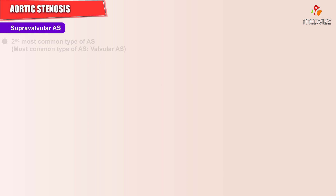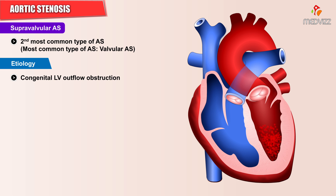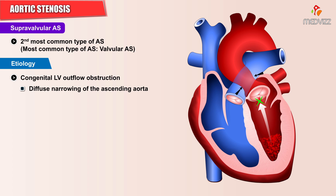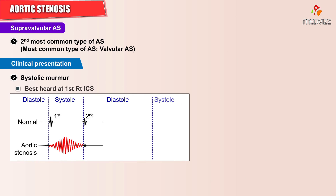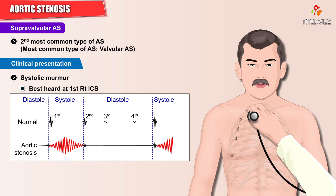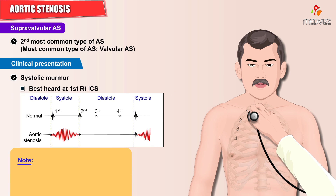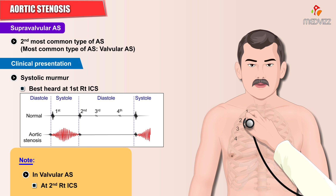Supravalvular aortic stenosis is the second most common type of aortic stenosis, whereas the valvular type remains the most common. It is a congenital left ventricular outflow tract obstruction due to diffuse narrowing of the ascending aorta. The systolic murmur is best heard in the first right intercostal space, in contrast to the valvular aortic stenosis murmur which is best heard in the second right intercostal space.